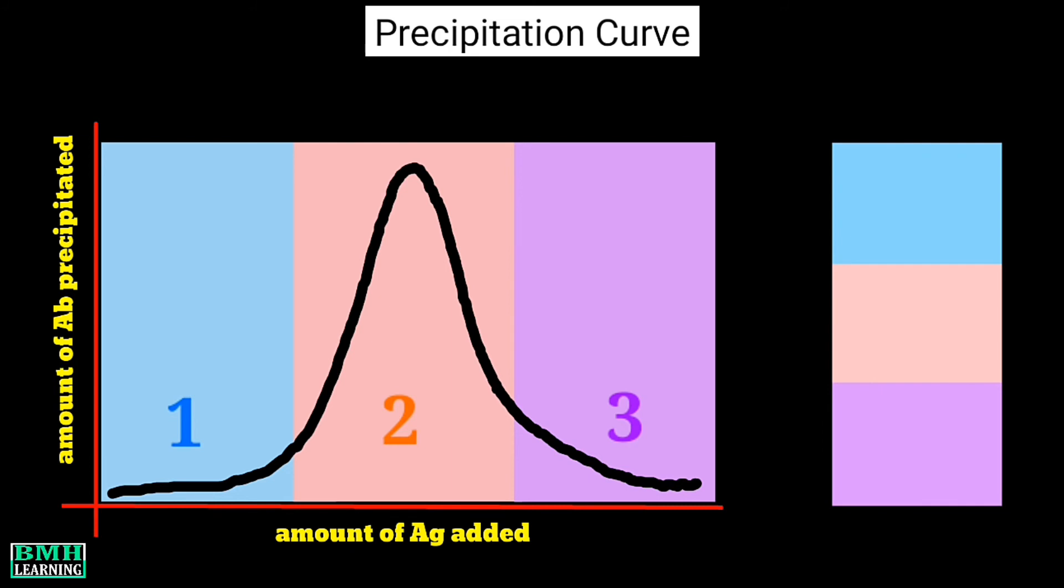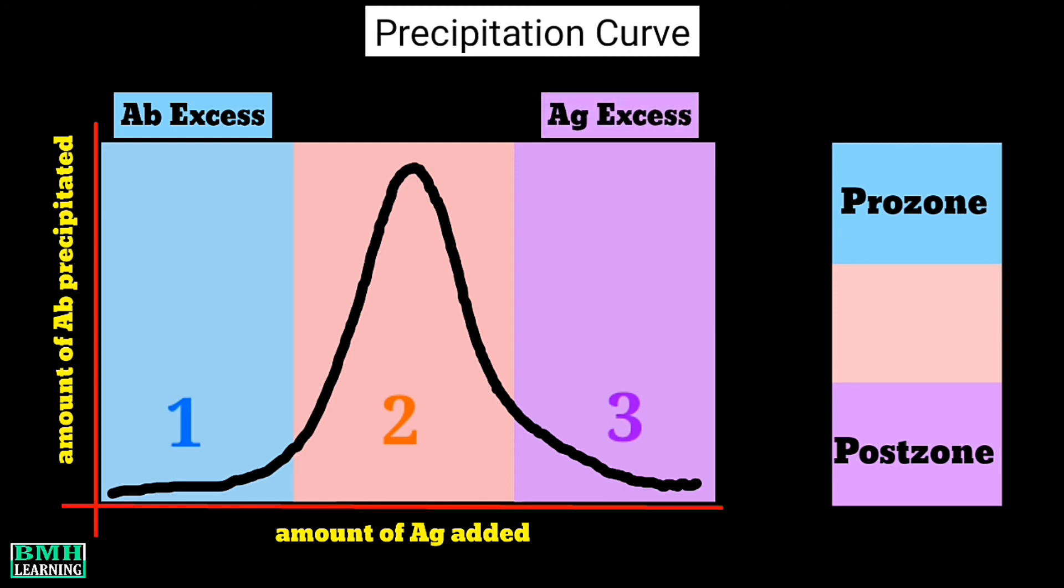So portion number one corresponds to prozone. That is, antibody is in excess as compared to antigen. The part in the diagram numbered as three denotes post-zone, and this refers to the opposite of the one. That is, antigen is in excess as compared to antibody.